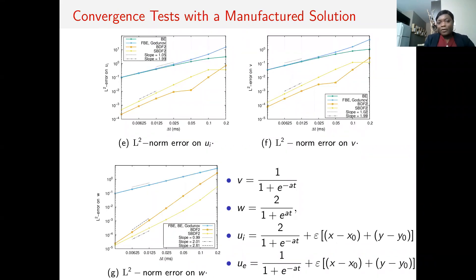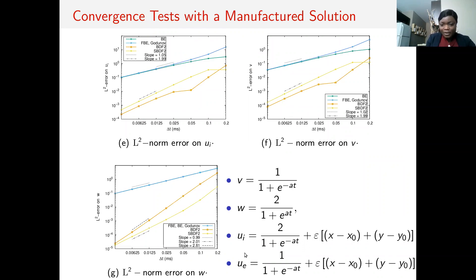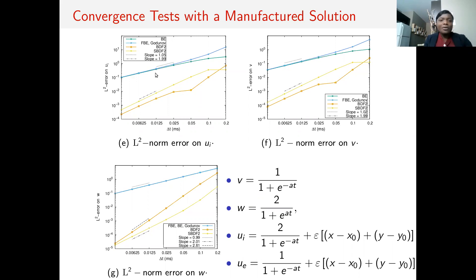Here we show convergence tests using the manufactured solution. For the transmembrane potential, we choose a smooth function; likewise for the gating variable, the intracellular potential, and the extracellular potential. We compute the L2 norm of the error between the manufactured solution and the approximate solution. We can see that all the methods — whether first or second order — show their expected order of convergence on all variables.